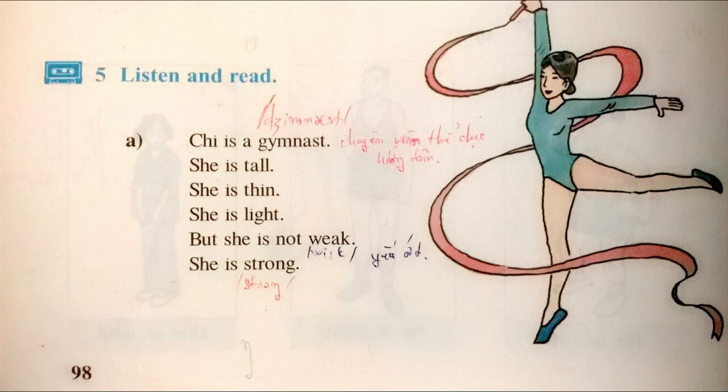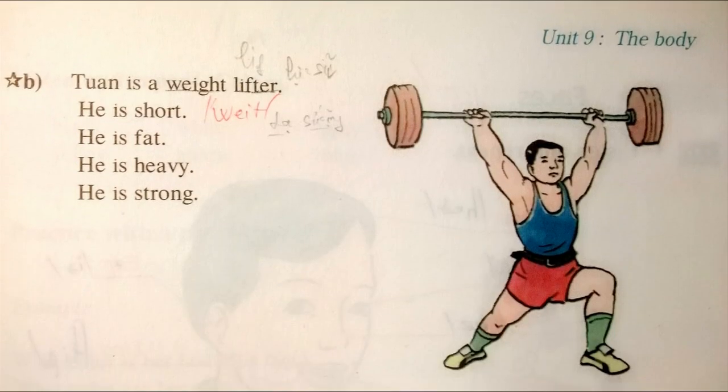Listen and Read. 1: She is a Weight Lifter. 6: He is Short. 2: He is Fat. 3: He is Heavy. 4: He is Strong.